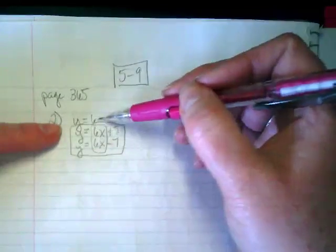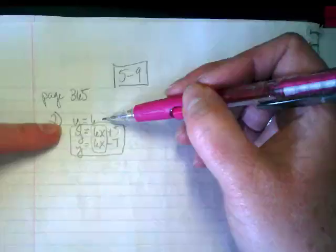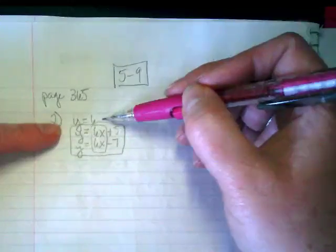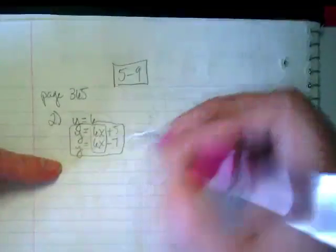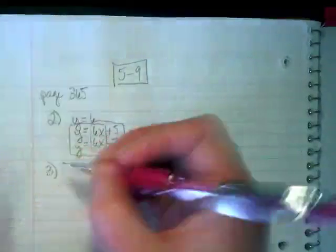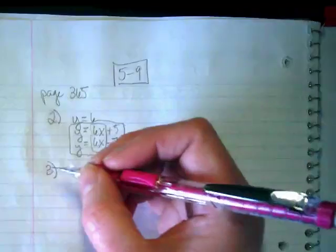So it's tricky because it has a 6 there, but is it a 6X? No. So it's not going to be parallel with these. Let's write number 3 down.